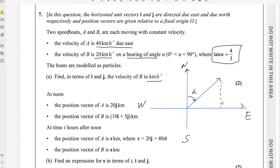We can draw a perpendicular from its head, and we will get two components. If this angle is alpha, this angle is also alpha by using alternate angles. Complete this triangle. We have tan alpha equals 4 over 3, which is opposite over adjacent. The side opposite to the angle is 4, and the adjacent side is 3.